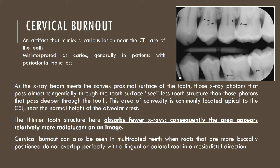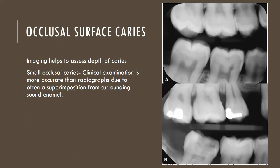Cervical burnout can also be seen in multi-rooted teeth when roots that are more buccally positioned do not overlap perfectly on the lingual or palatal root in a mesiodistal direction, often happening with the maxillary molars. When it comes to occlusal surface caries, these are best examined clinically. Imaging helps assess the depth of caries, but in case of small occlusal caries, clinical examination is more accurate than radiographs due to superimposition from surrounding sound enamel, as evident in image A where a very tiny occlusal caries on the first molar is nearly obscured by the thicker sound enamel. A larger caries is very easy to detect clinically and obvious on a radiograph because of greater tooth destruction.